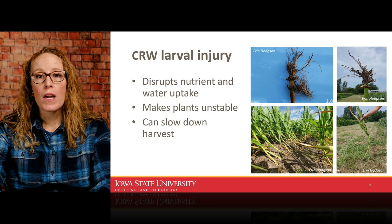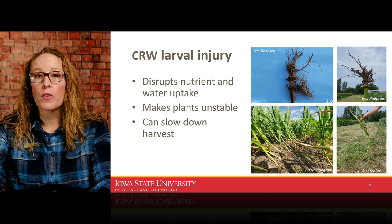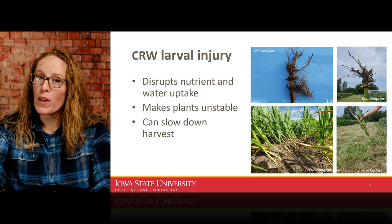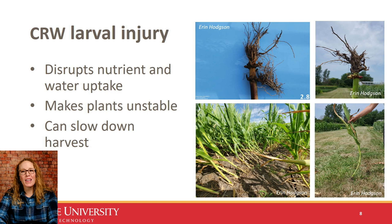The larvae are the most impactful stage for yield, because they feed on corn roots, can severely prune them back or destroy them, and ultimately disrupt nutrient and water uptake. That directly impacts yield, but you also have very tall plants on a small root system, making them unstable. In a high wind event or a derecho, corn can fall down, and depending on when these events happen, the corn may not right itself and stays down or dies. In other cases it tries to grow back up and you get that classic goosenecking.